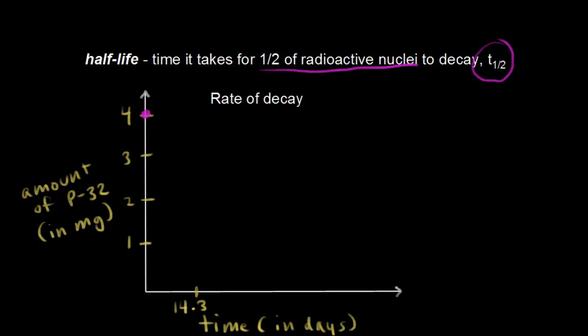Half of our sample should be left. So what's half of four? It's two. We can go ahead and graph our next data point. There should be two milligrams left after 14.3 days.